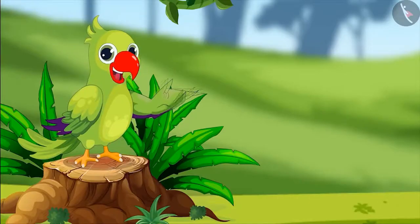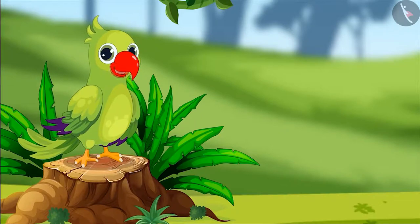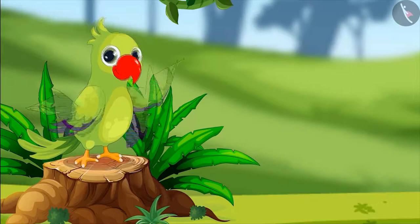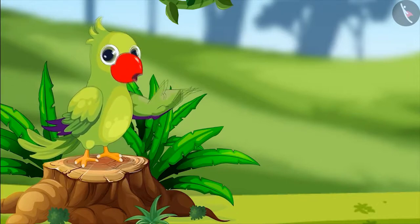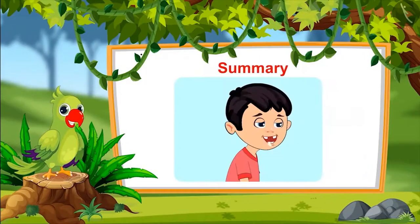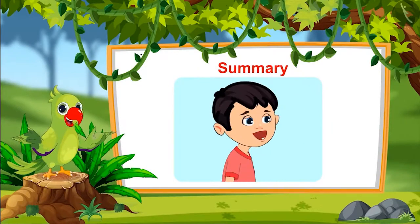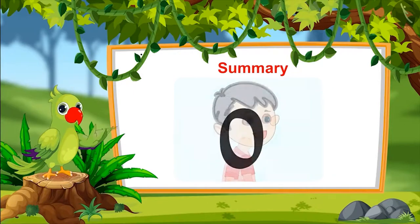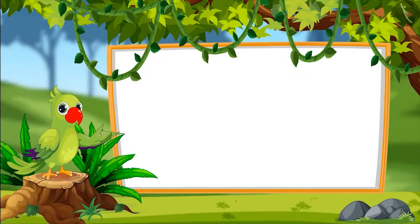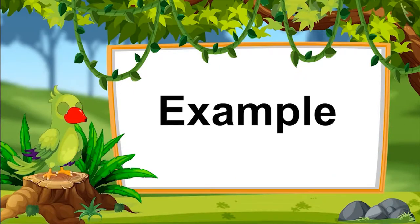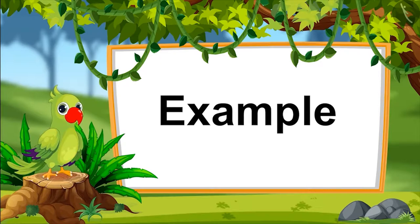So friends, did you enjoy learning about zero? Let us revise what all we have learned today. When we reduce things till we do not have a single thing left, then we say we have zero things. In the next video, we will look at some more examples to understand zero better. Till then, goodbye friends.